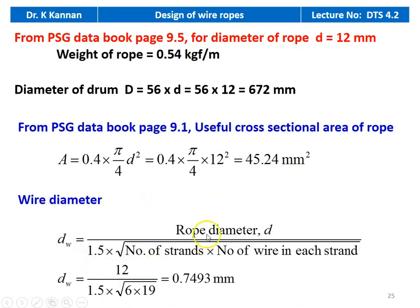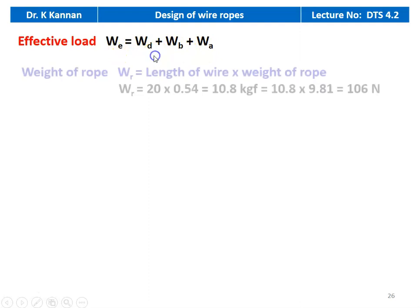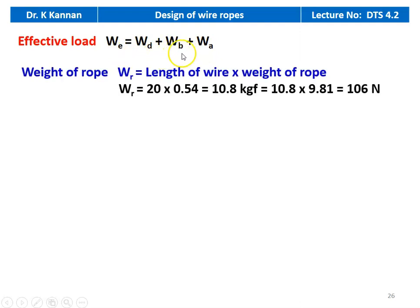Wire diameter D_w equal to rope diameter divided by 1.5 into square root of (number of strands into number of wires in each strand), so 12 divided by 1.5 into square root of 6×19 equal to 0.7493 millimeter. The effective load W equal to W_D plus W_B plus W_A, where W_D is the direct load, W_B is the bending load, and W_A is the acceleration load. Weight of the rope W_R equal to 20 into 0.54 equal to 10.8 kilogram force, which is 10.8 into 9.81 equal to 106 newton.